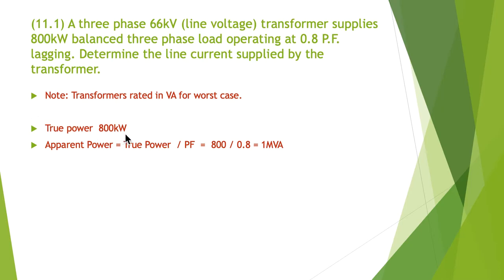We know that the true power is 800 kilowatts. One way to determine the apparent power is we know that true power divided by the power factor will give us the apparent power. So 800 kilowatts divided by 0.8 is going to give you one million or one MVA.